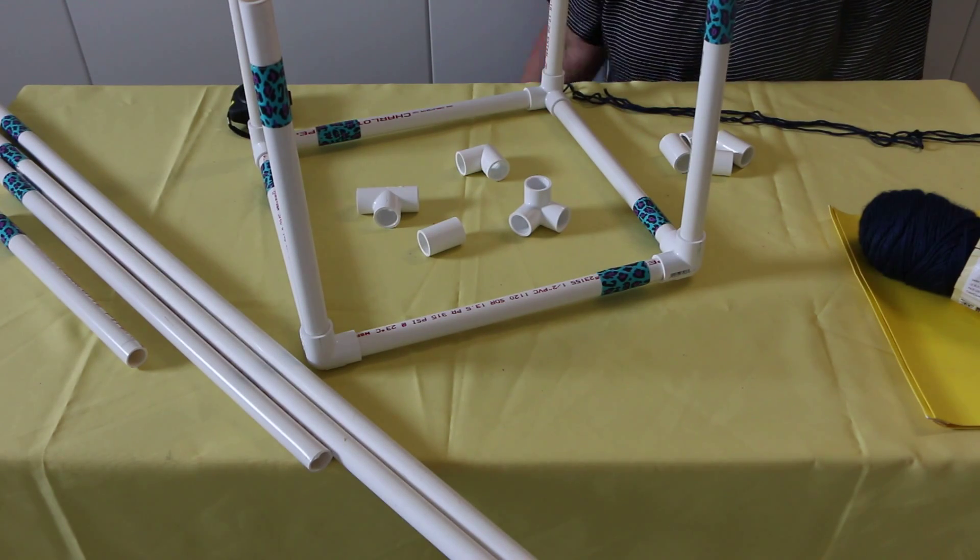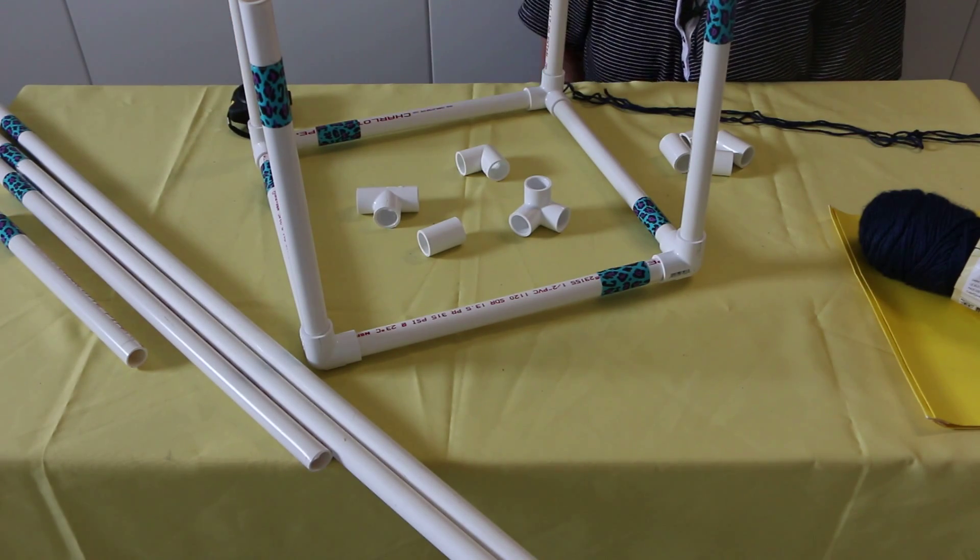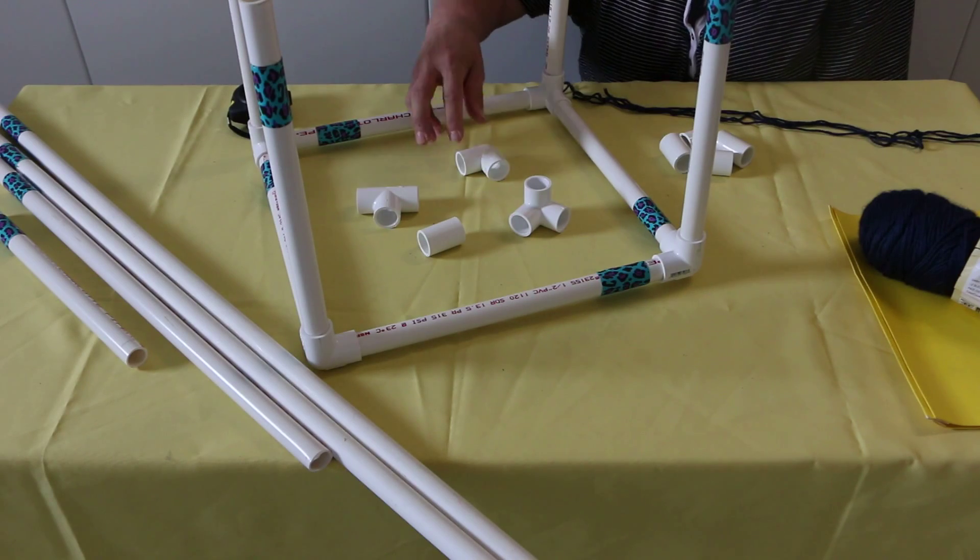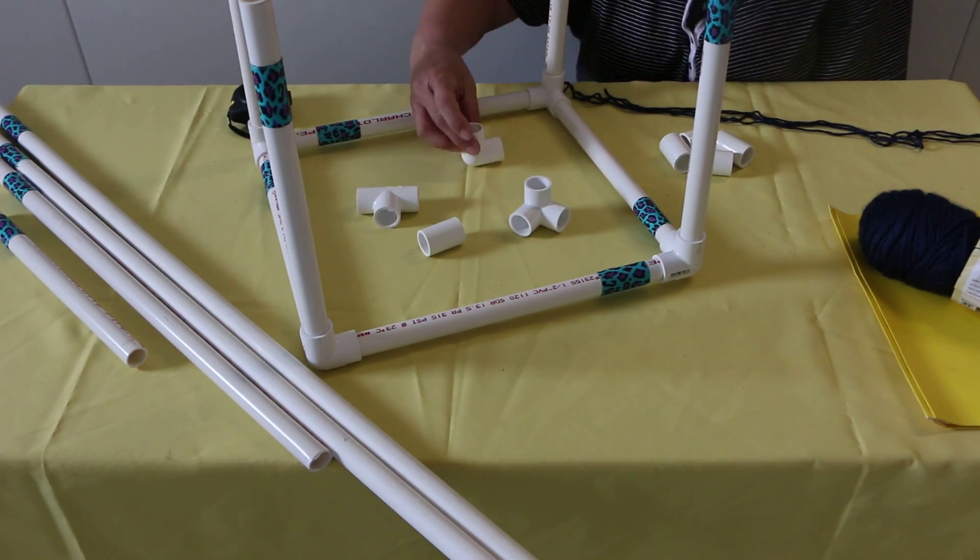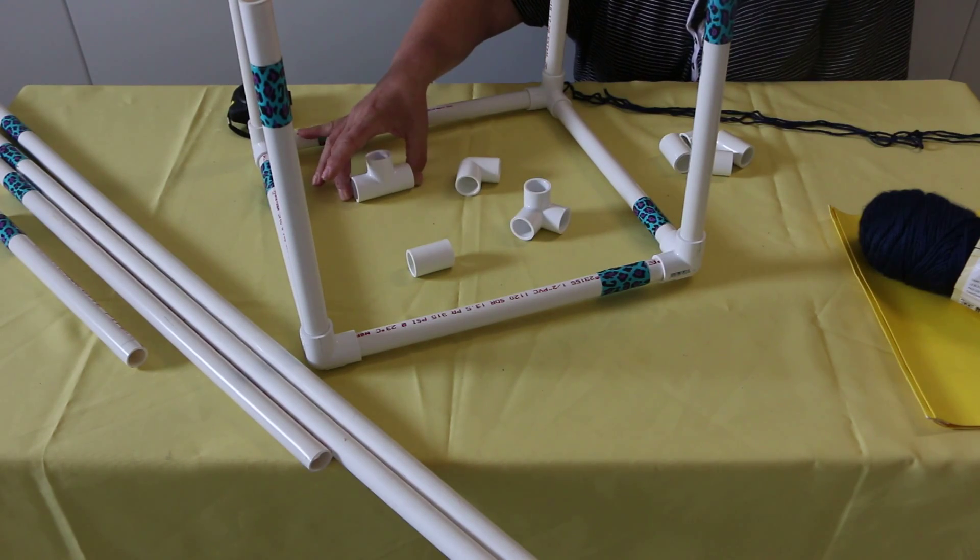So in each package you'll have four, three, two, one links of PVC. You'll have the connectors which are L shapes, Y shapes, a coupling, and you'll have a T joint.